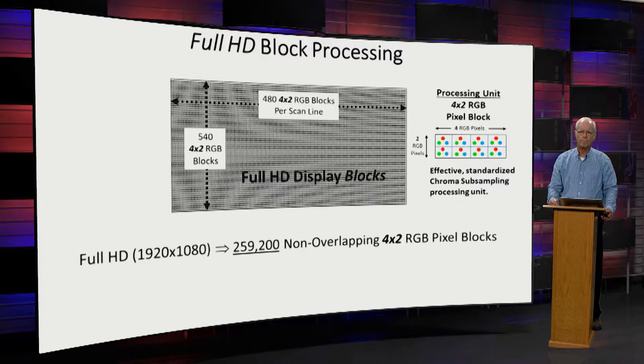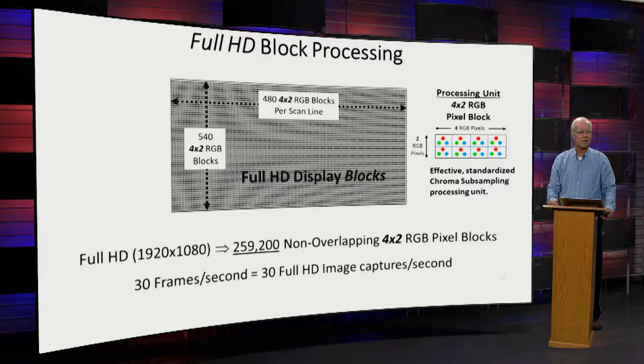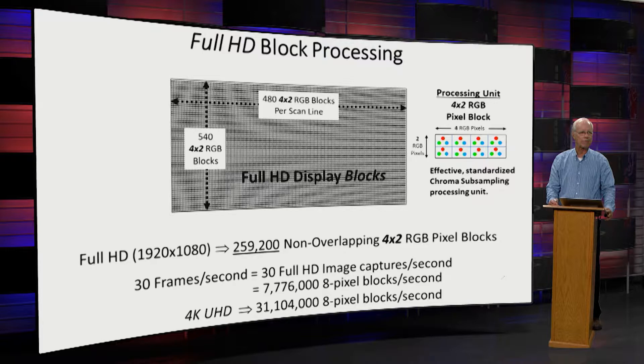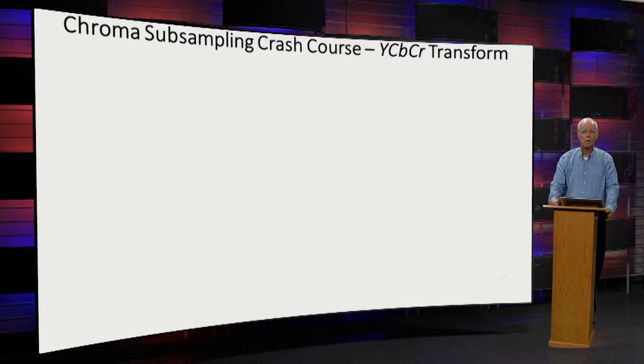At 30 frames per second — 30 full HD images per second of raw data — that is about 8 million of these blocks per second. At 4K, it's about 31 million per second. This is the meat of the discussion right here — a crash course on chroma subsampling. I've done everything I can to make it as simple as possible. It involves a transform called YCbCr.